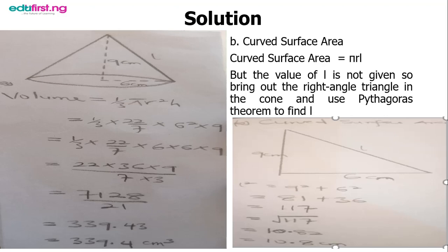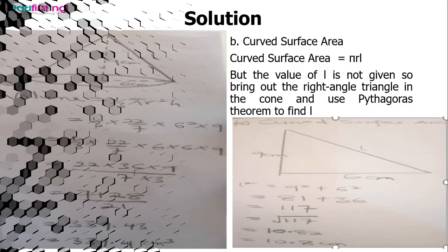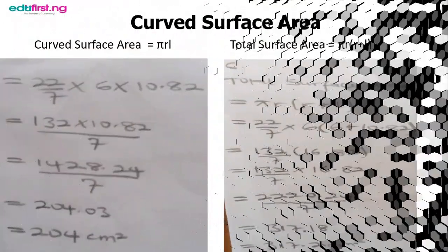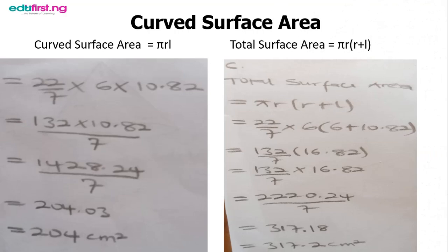We can now go ahead and solve for our curved surface area, which is πrl, because we have now known l. Our π is 22/7 as usual, times r which is 6, times l which we calculated as 10.82.